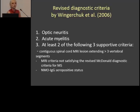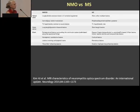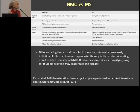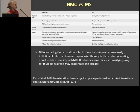There are diagnostic criteria — the revised diagnostic criteria by Wingerchuk from 2006 — which you can download from the literature. There is also a nice paper published in Neurology this year on MRI characteristics of NMO and how to distinguish NMO from multiple sclerosis. It is very important to distinguish them because the therapy is very different. Some therapy given for multiple sclerosis will do a lot of harm to NMO patients.